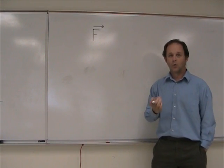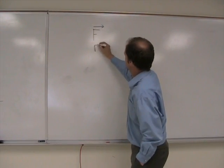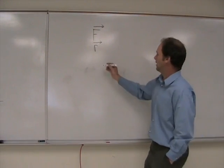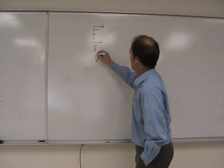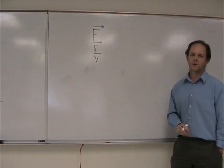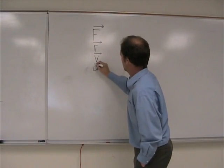Now other things that are a vector: distance, or the radial vector, is a vector. Displacement is a vector. Velocity, which you know is dr/dt, or r dot, or acceleration is a vector.